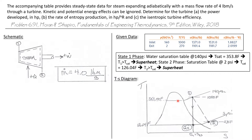Let's draw a temperature-entropy diagram. State one is on the 140 psi constant pressure line, and the saturation temperature at 140 psi is 353 degrees Fahrenheit, while state one is at 1000 degrees Fahrenheit. State two is on a 2 psi constant pressure line, where the saturation temperature is 126 degrees Fahrenheit, and state two is at 270 degrees Fahrenheit. Notice that the entropy at state two is greater than at state one, which we expect because this real process has irreversibilities that produce entropy.